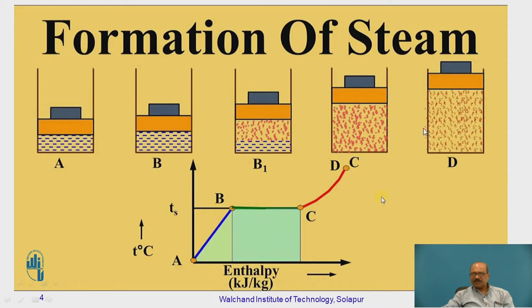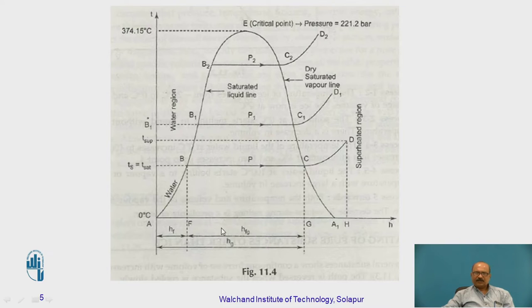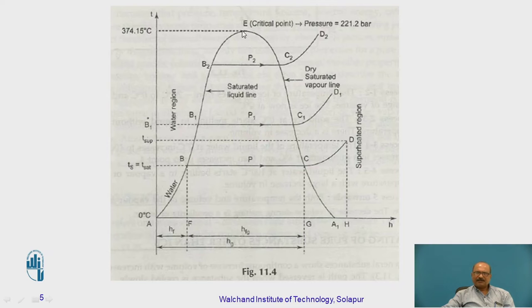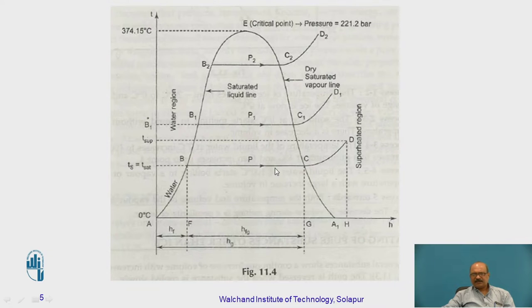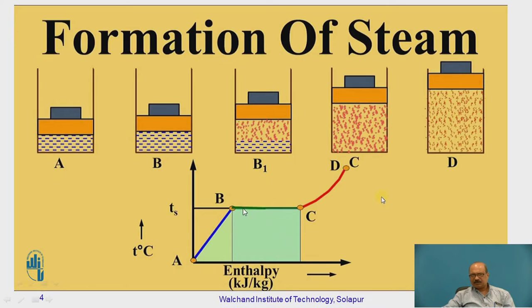The representation I have taken uses a piston and cylinder arrangement compared with this particular graph. The temperature range given here is from 0 degrees centigrade up to 374.15 degrees centigrade. This particular point is called the critical parameters point — whatever the temperature, pressure, or other parameters at this point are referred to as critical parameters. The pressures represented here are P, P1, and P2, with corresponding points B, B1, and B2. Water is converted into partially steam as shown in this graph.